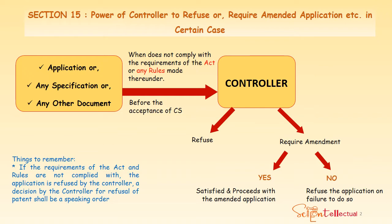If that amendment has been done and the controller is satisfied, then it will be proceeded towards grant. And if there is no amendment, then the controller may refuse the application on failure to do so. If the requirements of the Act and rules are not complied with, the application is refused by the controller, and the decision will be communicated in a speaking order.